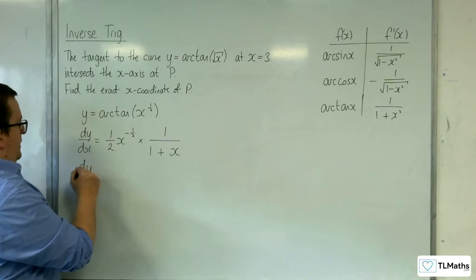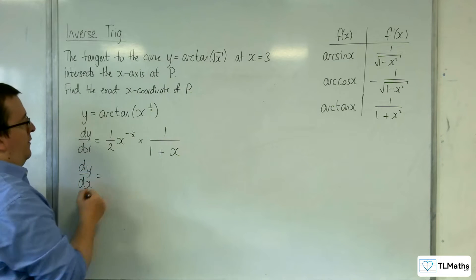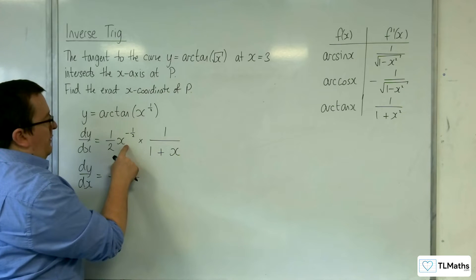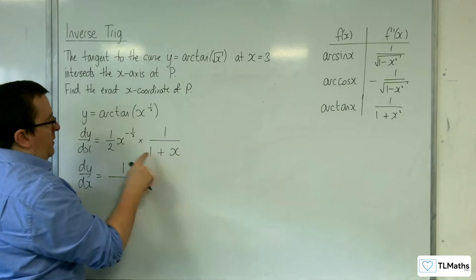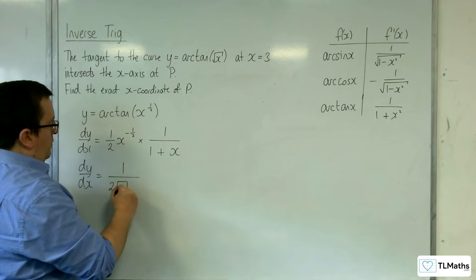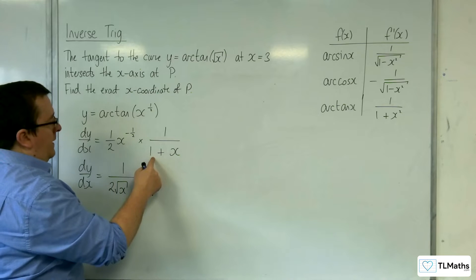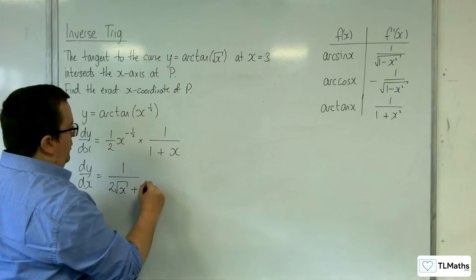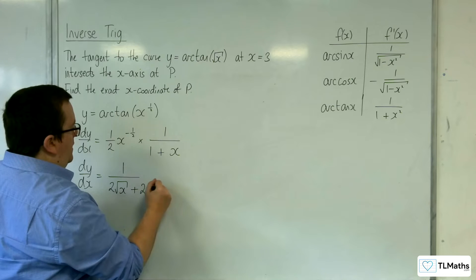So dy by dx, if we simplify this, is going to be equal to 1 over, now this is 1 over root x multiplying through, so we've got 1 over 2 root x multiplying through. So we'd have 2 root x times the 1, and then 2 root x times x, so plus 2x to the 3 halves.